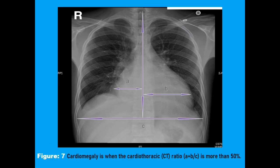This X-ray film shows how we calculate the cardiothoracic ratio. This is the cardiac silhouette — this is the maximum rightward diameter (A) and this is the maximum leftward diameter (B). We take the maximum rightward dilatation and maximum leftward dilatation and divide their sum by the thoracic diameter, represented by C. So it is A plus B divided by C. If this is more than 50%, it is suggestive of cardiomegaly.